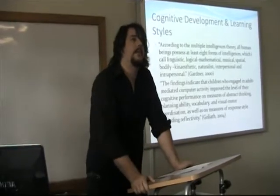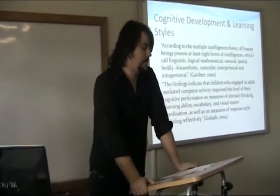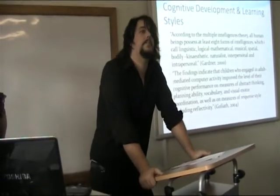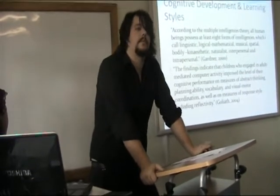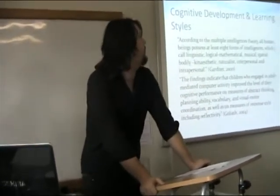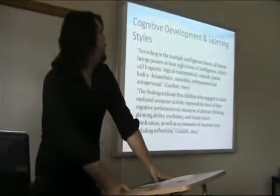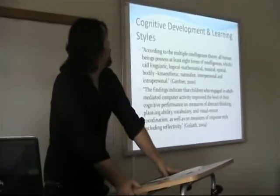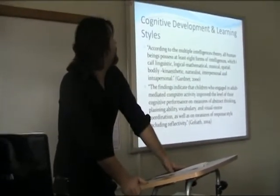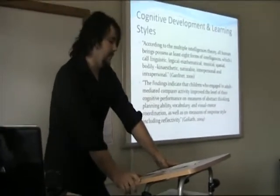Technology addresses multiple intelligences and accounts for different learning styles. In Howard Gardner's book, Can Technology Exploit the Many Ways of Knowing, it teaches us that according to multiple intelligences theory, all human beings possess at least eight forms of intelligences: linguistic, logical-mathematical, musical, spatial, bodily-kinaesthetic, naturalist, interpersonal and intrapersonal.